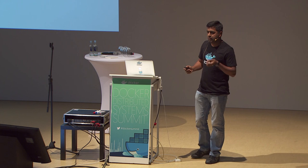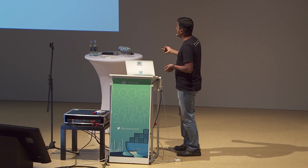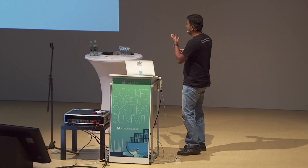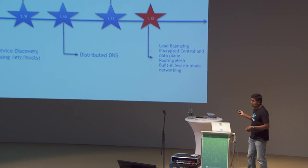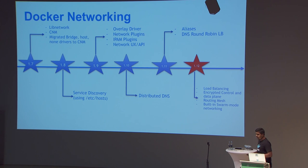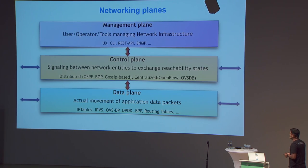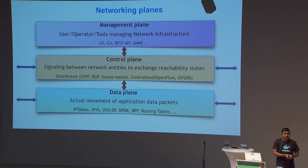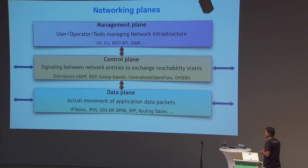In 1.12 we implemented load balancers, encrypted control plane paths, routing mesh, Swarm mode networking, and load balancing — lots of features implementing the full stack. Before going into the details of control plane and data plane, I'd like to take some time explaining exactly what those terms mean in networking, so we can appreciate why networking solutions can be complex.